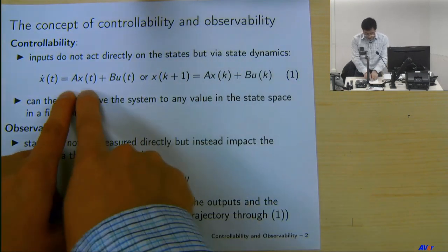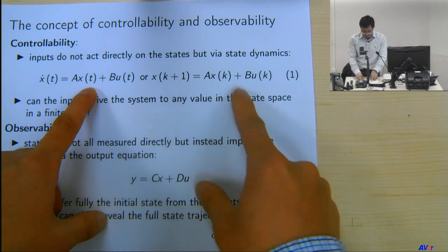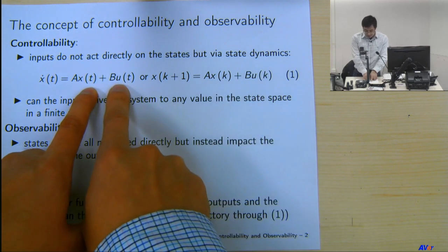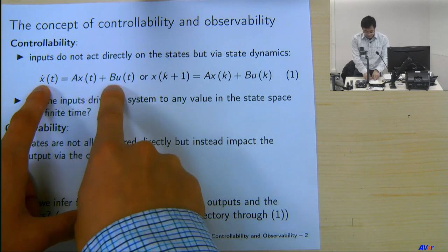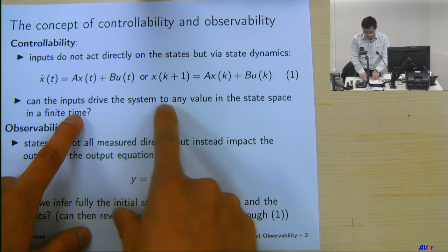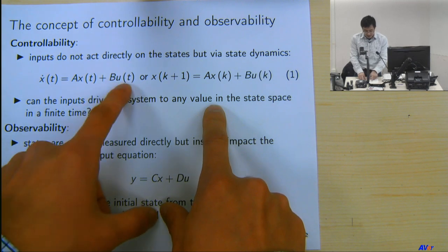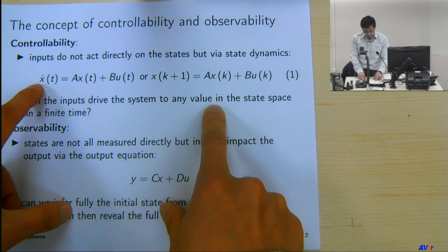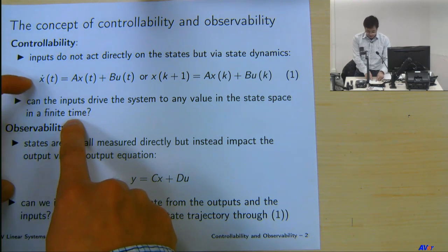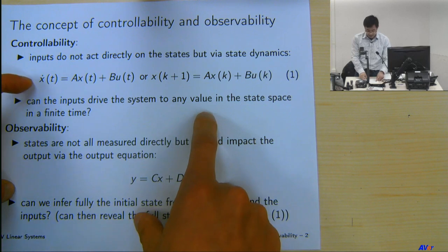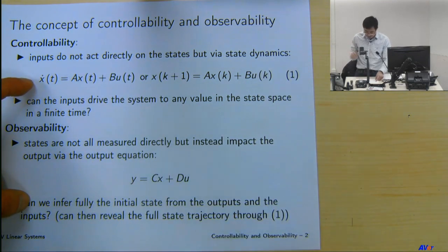If you think about the system x-dot equals Ax plus Bu, or in discrete time x_{k+1} equals Ax_k plus Bu_k, the input u does not directly act on the state — it has to go through the dynamics equation. So the question is: can the input drive the system to any value in the state space? Can this input u, after going through the B matrix, impact x arbitrarily over a finite time? That's the question of controllability — whether the state can be arbitrarily steered by the input.